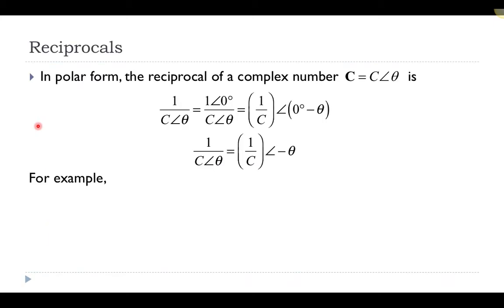The reciprocal of a quantity is just 1 over that quantity, and that may be familiar if you think back to circuits — if you were adding resistors in parallel. You added those values as the reciprocal of the resistance, and so you can imagine that that might be important as we look at circuits in AC and we combine resistors, capacitors, and inductors together.